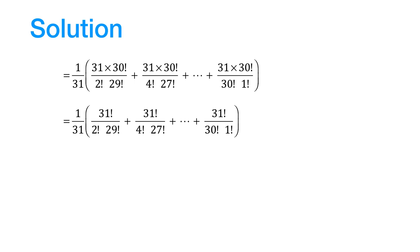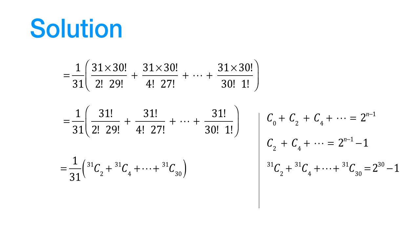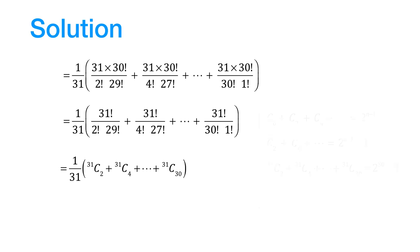Now, we know that the sum of the even binomial coefficients C0, C2, C4, ... C30 would be equal to 2 to the power 30 minus 1, and therefore the sum of our series can now be found. It's equal to 2 to the power 30 minus 1, divided by 31. So the correct answer is option D.